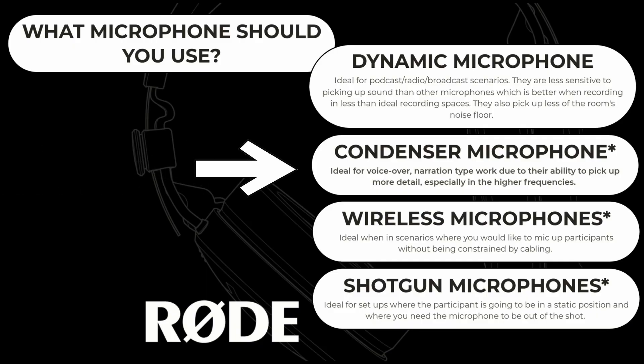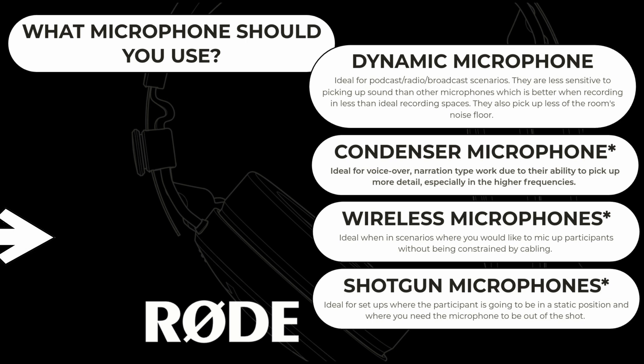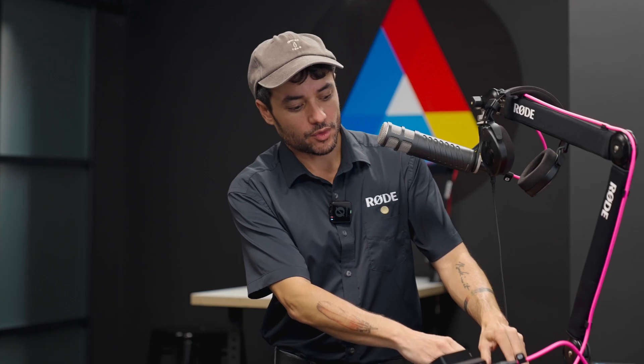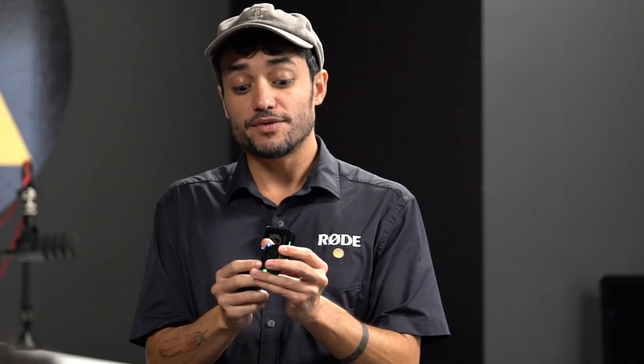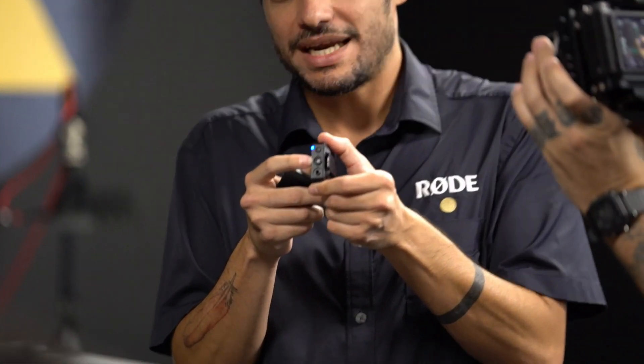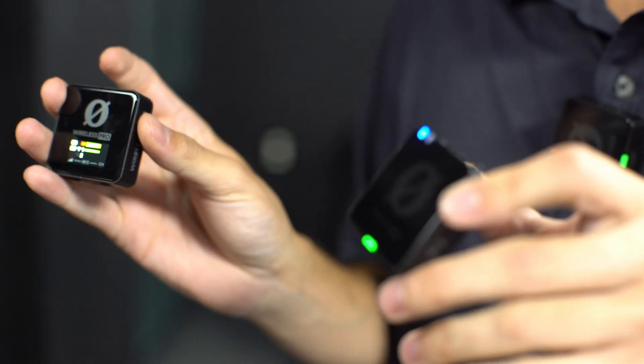Condenser microphones are historically used more in music studios. Another type of microphone is wireless microphones. How do wireless microphones work? There's a device with a little display — this is the receiver. And then there's a device with no display but a little built-in microphone — this is the transmitter. So you have the receiver and the transmitter.